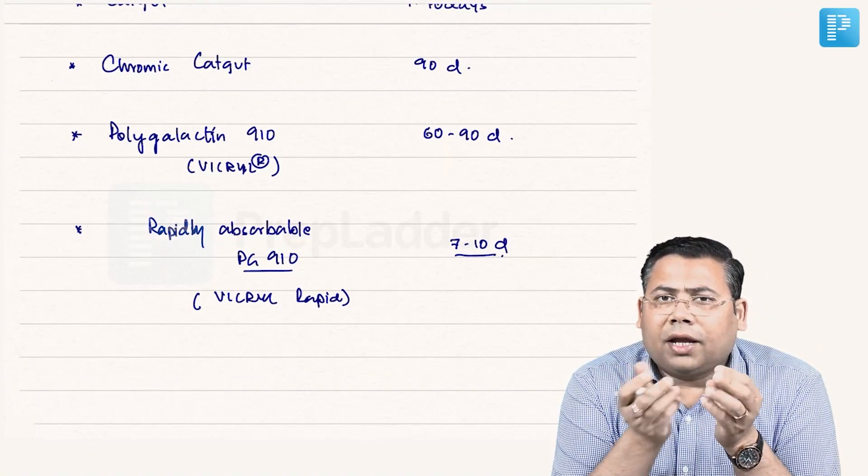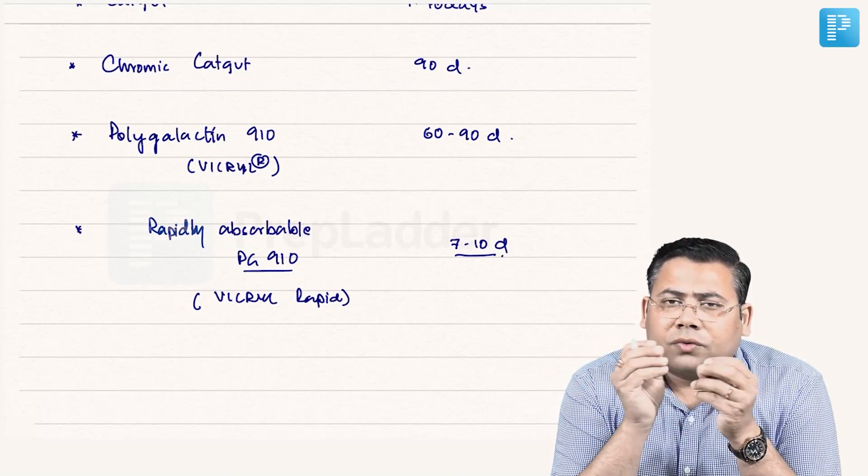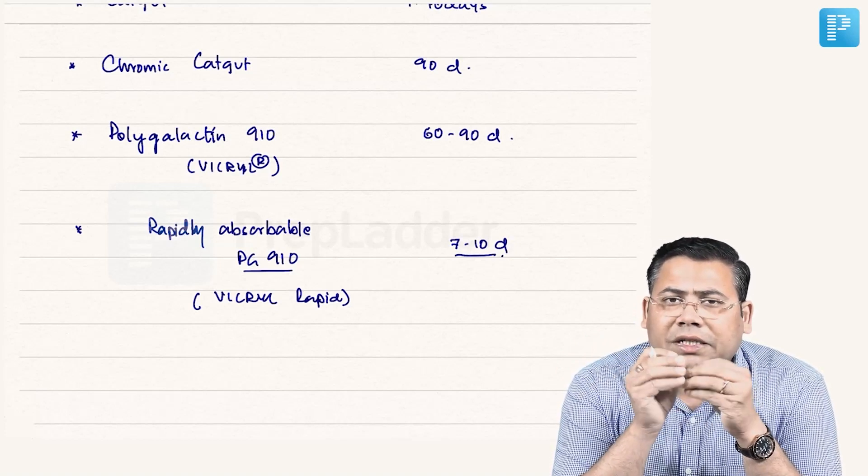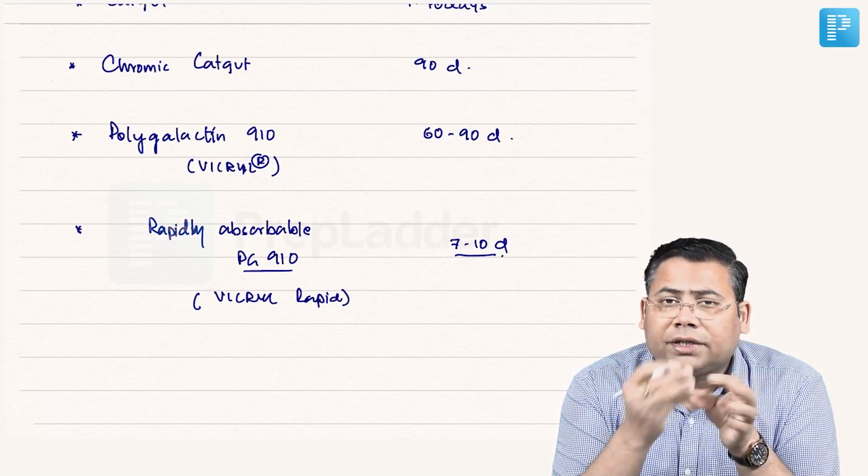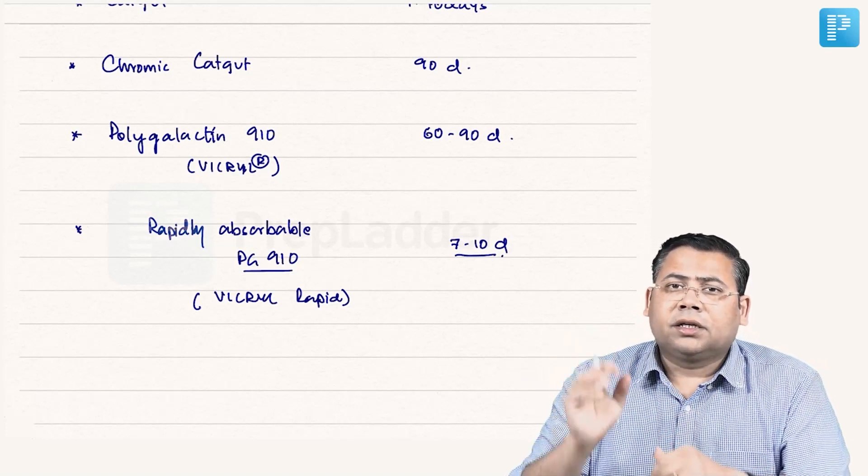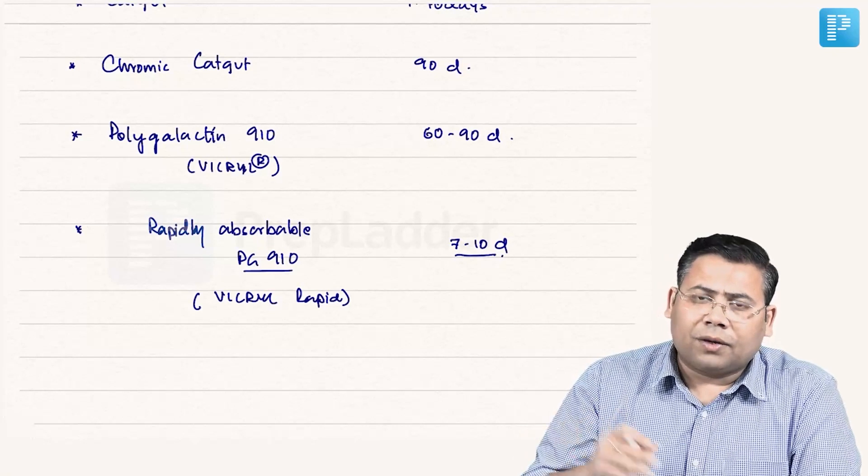After 7 to 10 days, you will see that it breaks open and automatically it is moved out. So this is what is the beauty of this Vicryl Rapid. Within 7 to 10 days, it loses its complete strength and it opens and it is taken out or it itself comes out.